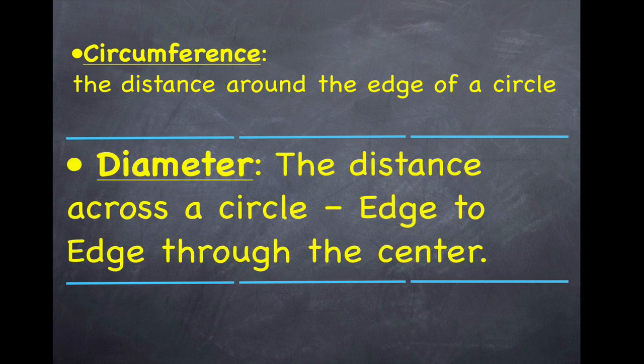There's the diameter. This is the distance across the circle, edge to edge, right through the center. You can imagine if you drew lines through a circle, they'd be shorter if you started at the top from the edge to the edge. But if you go right through the center, it would be the longest point across the circle.